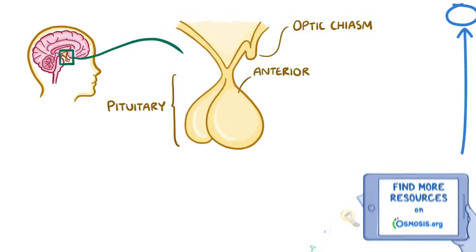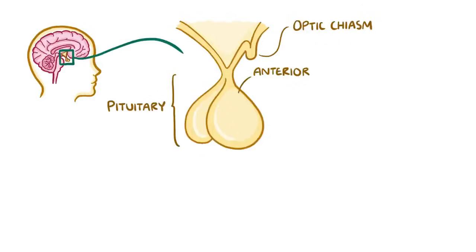The anterior pituitary, which is the front of the pituitary gland, contains a few different types of cells, and each of them secretes a different type of hormone. One group of cells in the anterior pituitary are called the lactotrophs, and they secrete prolactin.